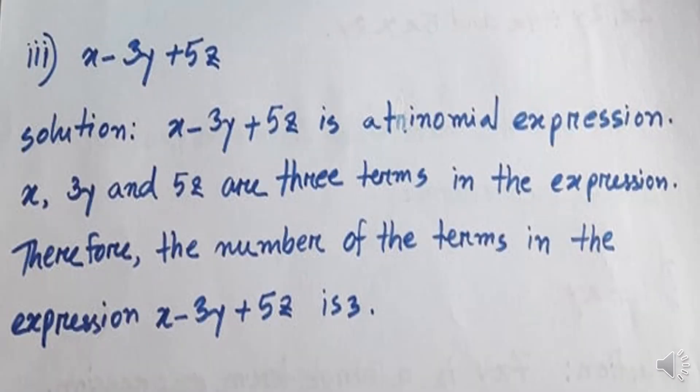Number 3: x minus 3y plus 5z. Solution: x minus 3y plus 5z is a trinomial expression. x, 3y, and 5z are three terms in the expression. Therefore, the number of terms in the expression x minus 3y plus 5z is three.